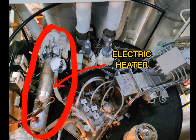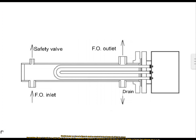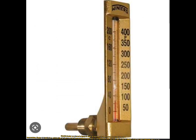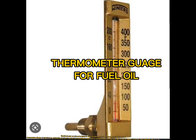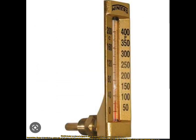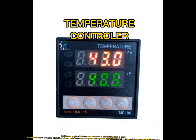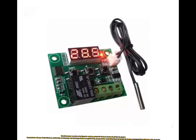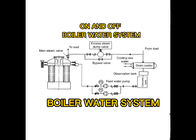Electric heater, as shown in the figure, is used as standard to heat heavy oil fuel to the proper temperature. The heater is installed on the outlet side of the oil pump and oil temperature is regulated by a temperature controller. The boiler element in the fuel oil heater is formed such that nichrome wire is in the boiler water system.